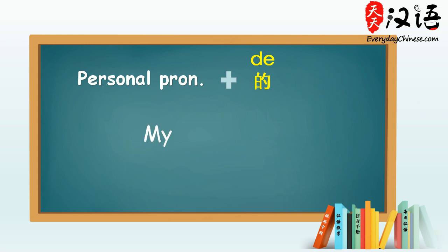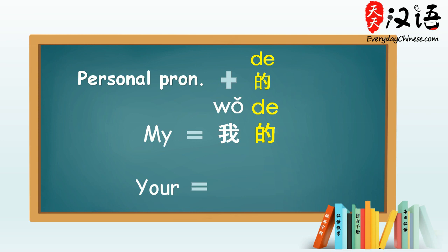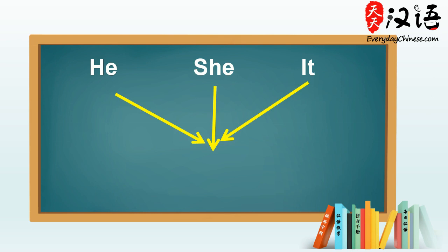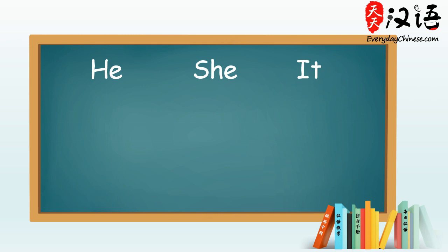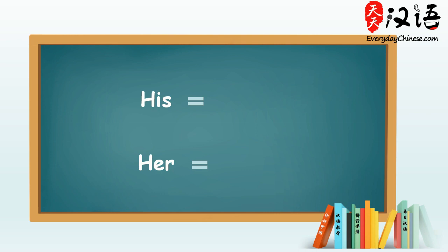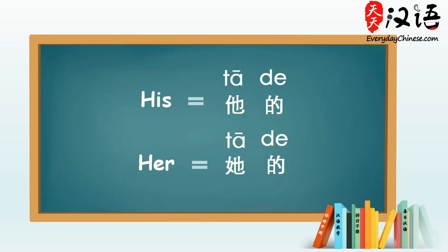So, my is 我的, your is 你的. What about his or her? The Chinese word for he, she, and it are all pronounced 她. Yes, you've heard correctly — he, she, and it all have the same pronunciation in Chinese, which is 她. Notice, in spite of the same pronunciation, their Chinese characters are not written the same. So to say his or her, you simply add the particle 的 after 她, then you get 她的.